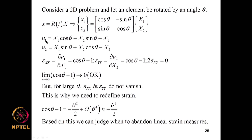Computing the infinitesimal strain: ∂u1/∂X1 = cosθ − 1, εYY = ∂u2/∂X2 = cosθ − 1, and shear strain is 0. For large θ, εXX and εYY do not vanish — this is why we need to redefine strain when considering problems with large displacements.